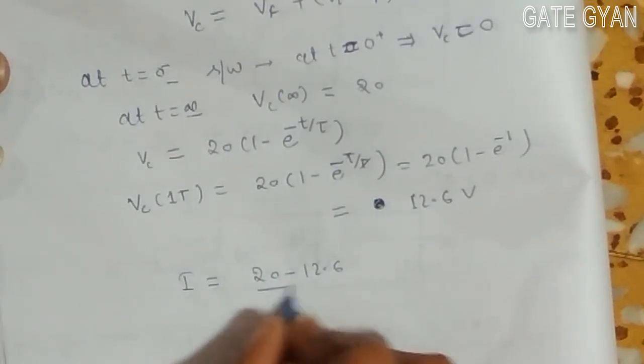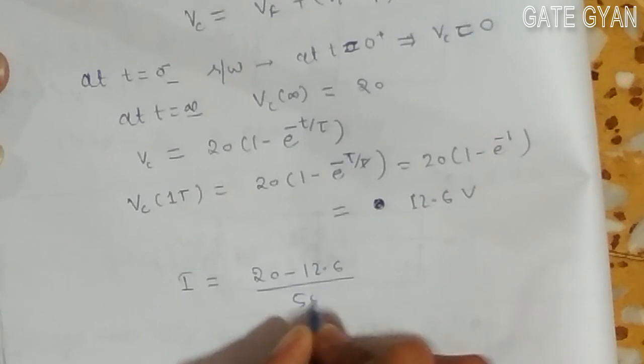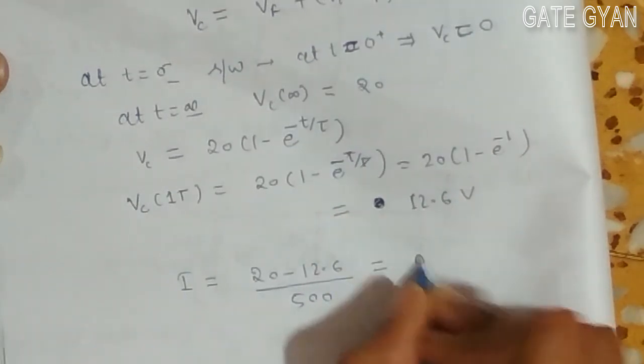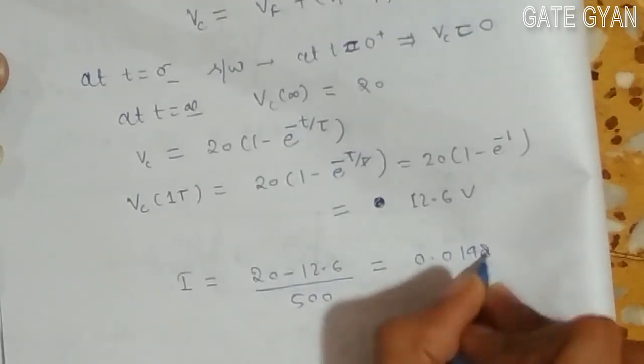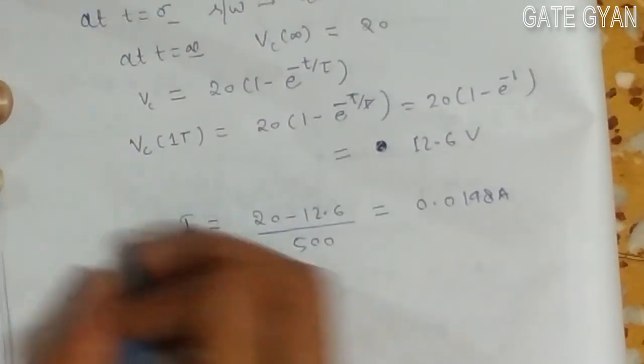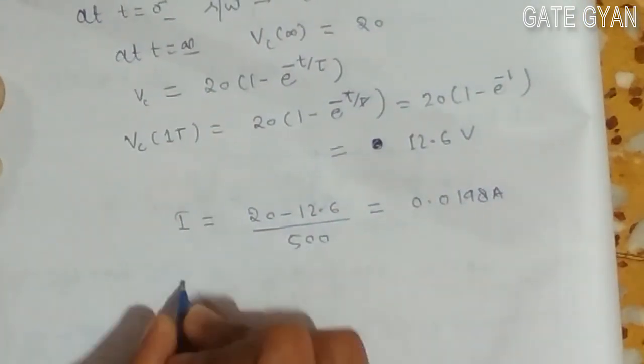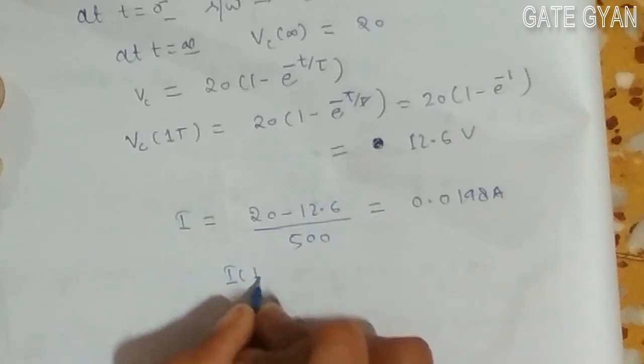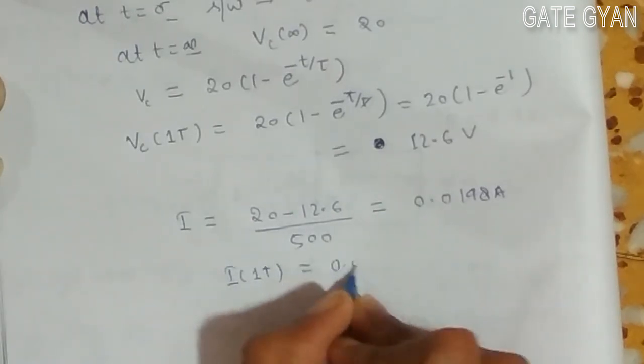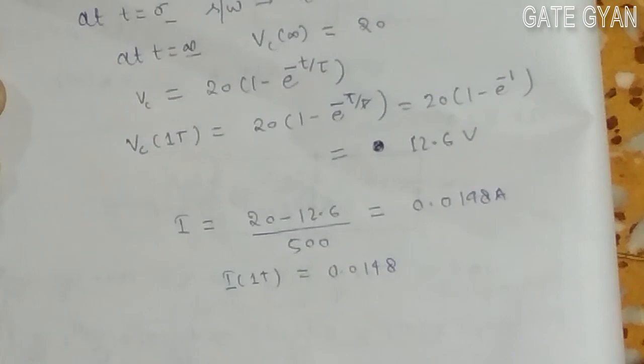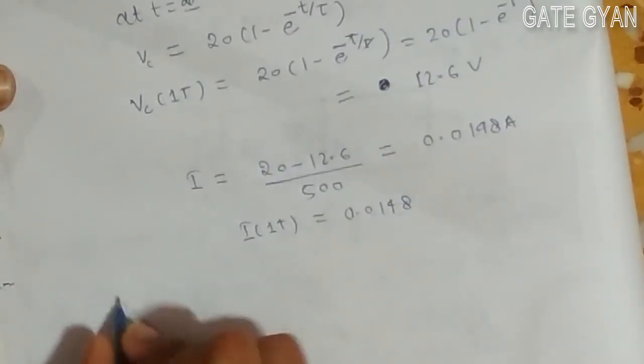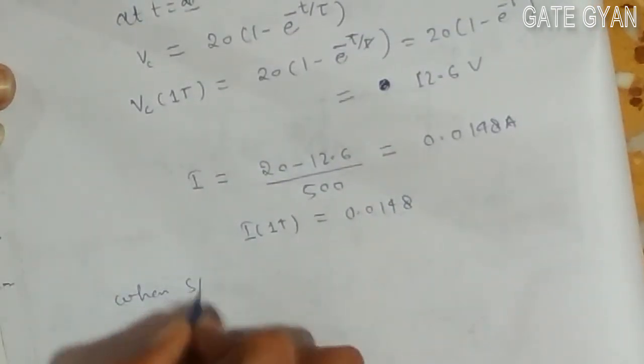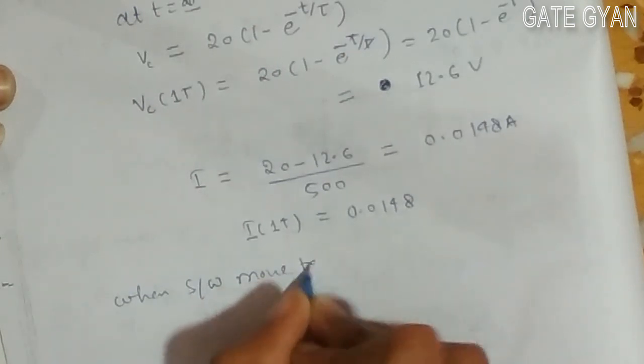I will get i. So my i is given by 20 minus 12.6 upon 500, which I will get as 0.0148 Ampere. This is my i at 1 time constant. You can say i at 1 time constant is 0.0148 Ampere.